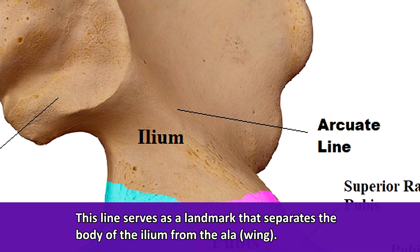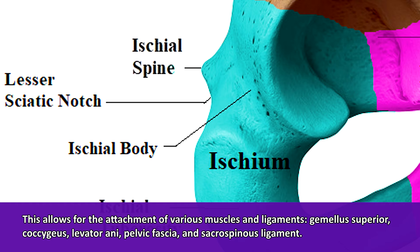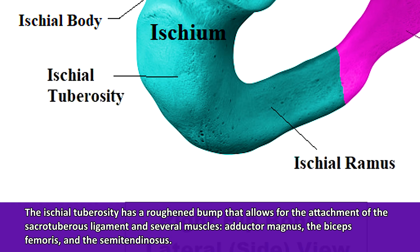Now let's talk about the ischium of the hip bone, which is the lower rear portion or posterior inferior region of the hip bone. Like the ilium, the ischium can be divided into two main regions: the body, which makes up the superior region of the ischium and forms approximately two-fifths of the acetabulum; and the ramus, a branch-like structure making up the inferior portion that connects to the inferior ramus of the pubis. On the posterior region of the ischium is a projection called the ischial spine, allowing attachment of various muscles and ligaments. Below that is the lesser sciatic notch, which allows for the passage of nerves and vessels. The ischial tuberosity on the lateral side is a roughened bump that allows for the attachment of the sacrotuberous ligament as well as several muscles.